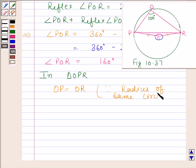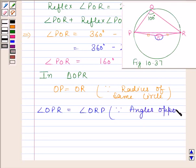Now, as OP is equal to OR, therefore, angle OPR is equal to angle ORP because angles opposite to equal sides are equal.